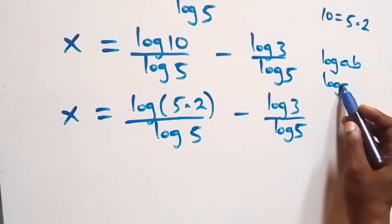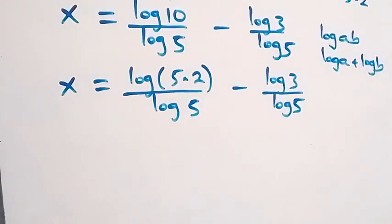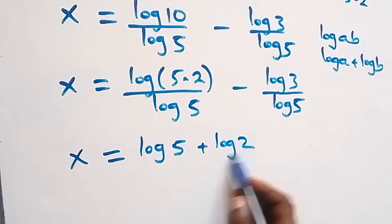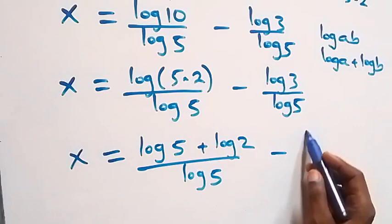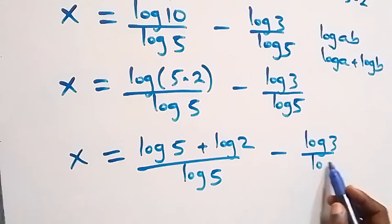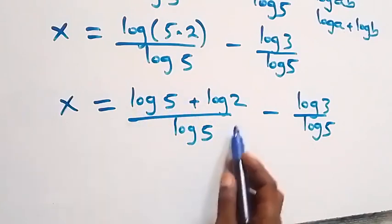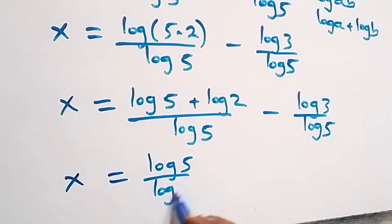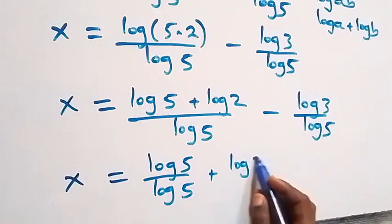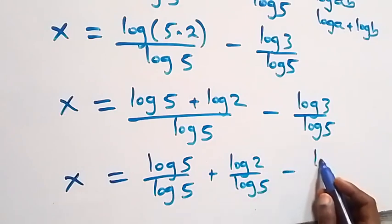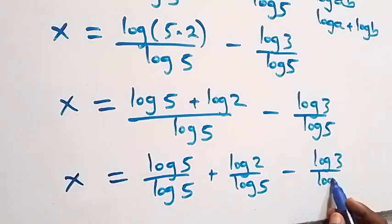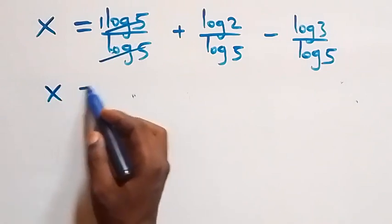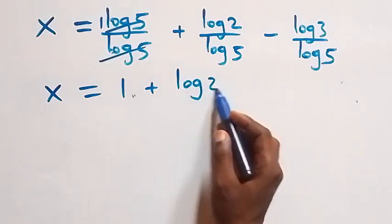So we have x equals log 5 plus log 2, over log 5, then minus log 3 over log 5. We separate this further into two fractions: x equals log 5 over log 5, plus log 2 over log 5, minus log 3 over log 5. Log 5 over log 5 cancels to give 1, so x equals 1 plus log 2 over log 5, minus log 3 over log 5.